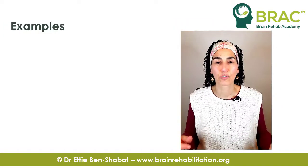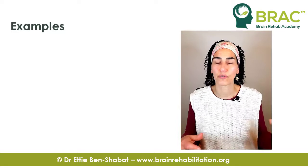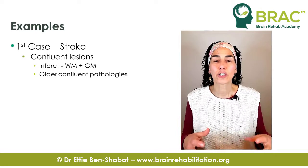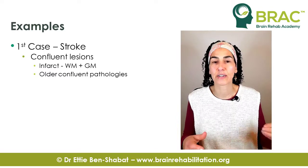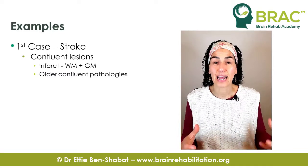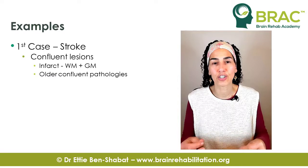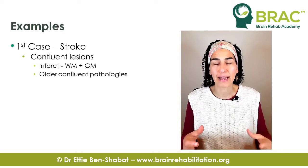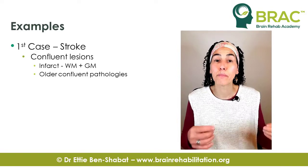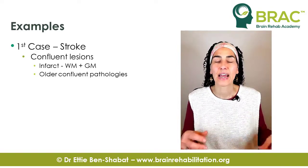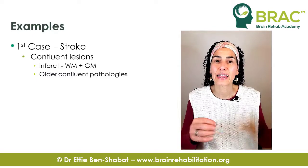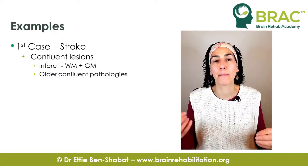The first case is a stroke patient we treated in which the report was talking about confluent lesions related to the infarct and confluent lesions that were there pre-morbidly. When you looked at the brain images, you could see that the confluent lesions related to the infarct affected the white matter and the gray matter, but weren't that extensive. In fact, the confluent lesions that were there pre-morbidly were even more extensive, indicating underlying pathological processes that limited this person's ability to recover.